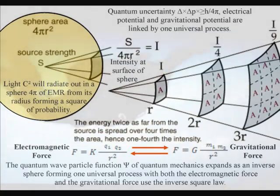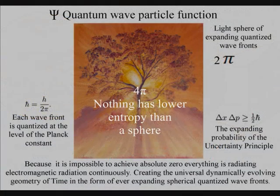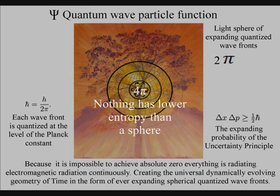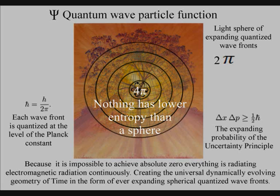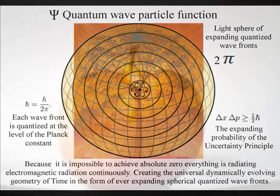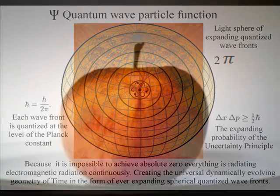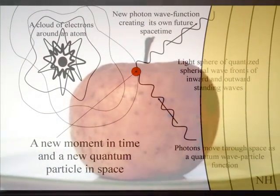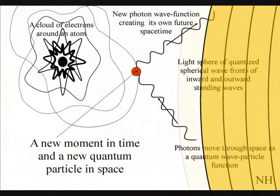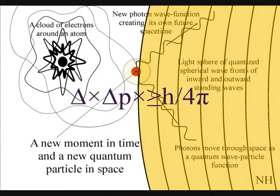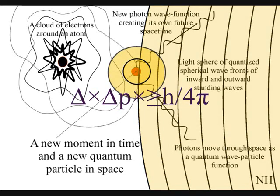The second law of thermodynamics falls out of this theory. The organization for the spontaneous disorganization of entropy is formed by the spherical symmetry of the quantum wave particle function. The spontaneous absorption and emission of light forms the flow of time with photon energy cascading down, forming greater degrees of freedom for the flow of entropy.